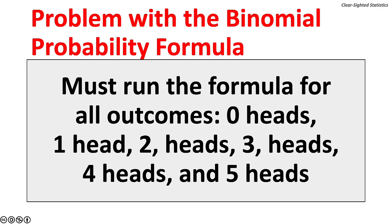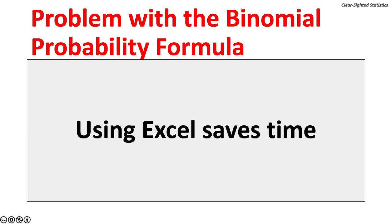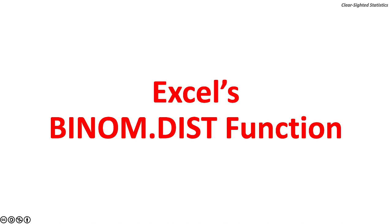The problem with using the binomial probability formula is that one must run the formula for all six outcomes: zero heads, one head, two heads, three heads, four heads, and five heads. Running the binomial probability formula six times is time consuming. Using Excel or another statistical application will save time.